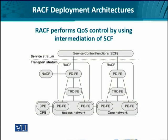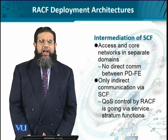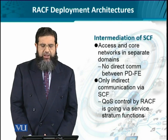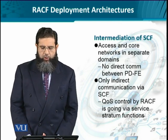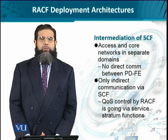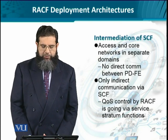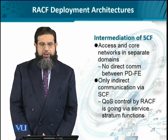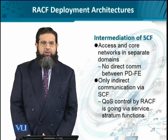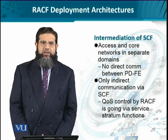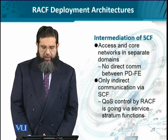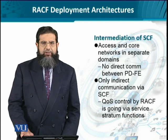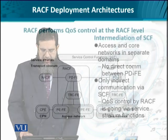What are the pros and cons? Since the access and core networks are separate domains, within the RACF the policy decision functional entities of the core and access networks are not going to communicate with each other directly. Only indirect communication is possible through the service control function. All signaling performed for QoS control comes via the service stratum functions, meaning the application layer spells out its QoS functional requirements and the SCF dictates the RACF to mediate between the core and access networks.